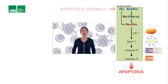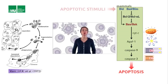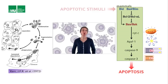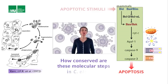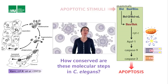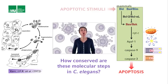Active caspases induce the processes that lead to molecular changes typical of apoptotic cells, such as PS externalization and DNA fragmentation, which altogether result in the dismantling of the cell and its engulfment and degradation. How conserved are these molecular steps in the worm, in C. elegans? Let's look at the genetic pathways in worms and mammals and compare them, then see what we know about each of the steps at the molecular level, starting at the bottom.